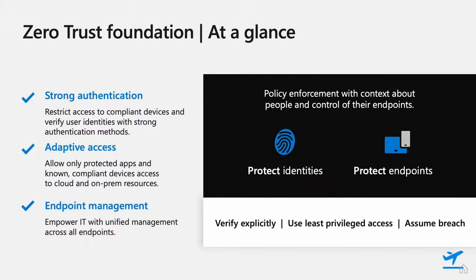Let me frame Zero Trust for a second. Zero Trust has three components. We start with strong authentication — using an authentication method or credential that isn't spoofable or phishable. Think about things like Windows Hello for Business, Fido keys, things that users know but also have.